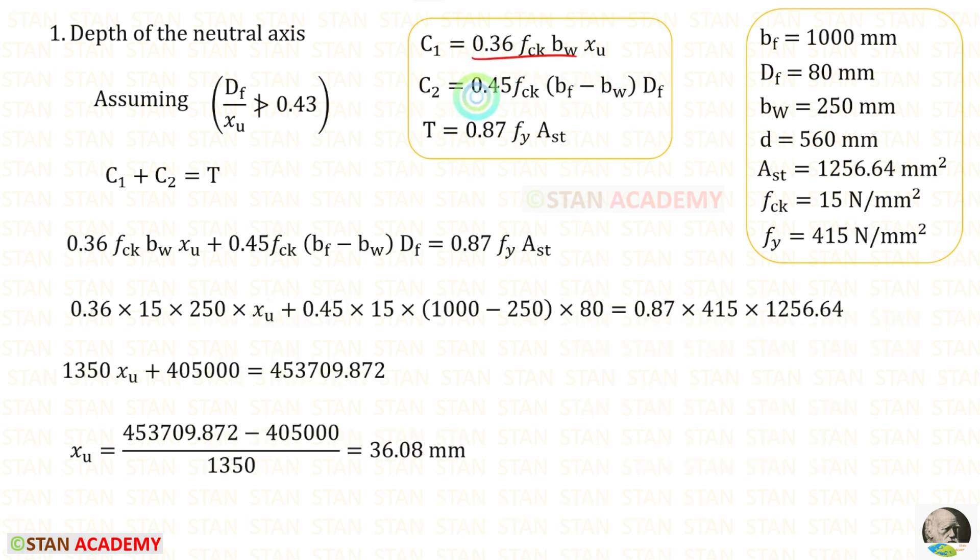Let us apply C1, C2 and T. After applying all of the values and after simplifying, for xu we will get 36.08. The depth of the flange is 80. Xu should be more than that. Also for Df upon xu, we will get 2.21 which is more than 0.43.